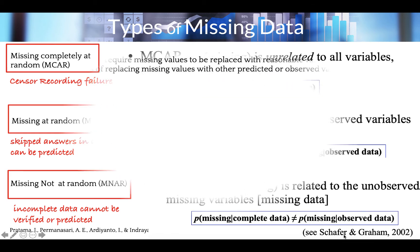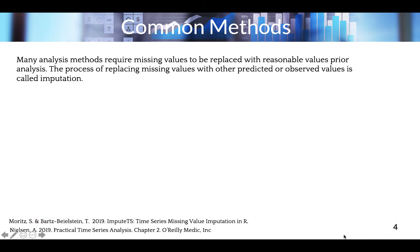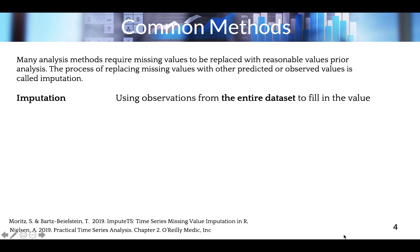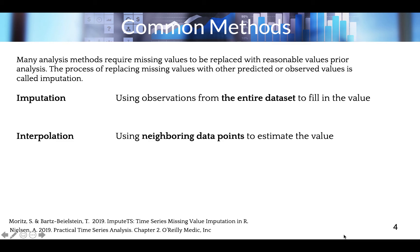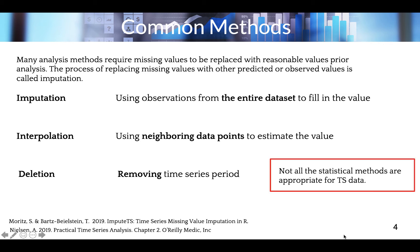Many analysis methods require missing values to be replaced with reasonable values up front. In statistics, this process is called imputation. Several methods have been introduced to address missing values according to their missingness mechanism. The most common are: imputation, where we fill in missing data based on observations about the entire dataset; interpolation, where we use neighboring data points to estimate the missing value; and deletion of affected time periods, where we choose not to use time periods that have missing data.